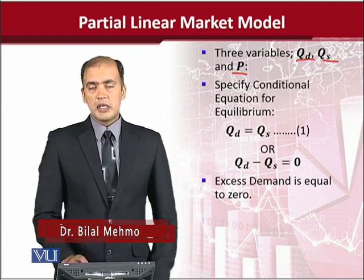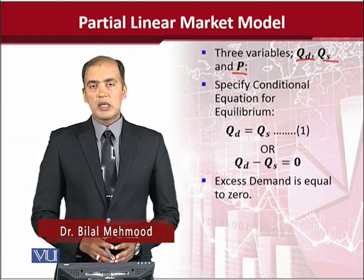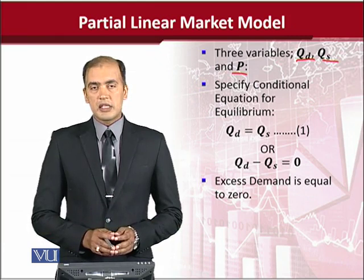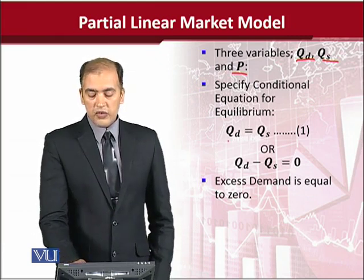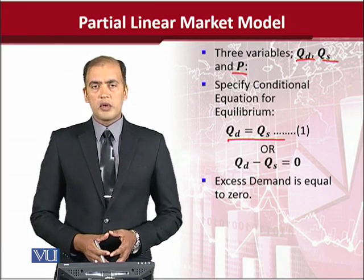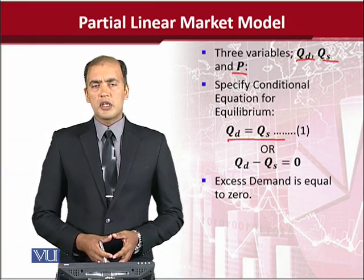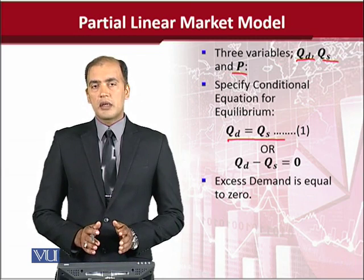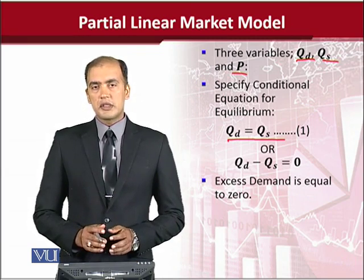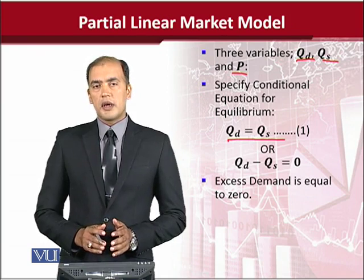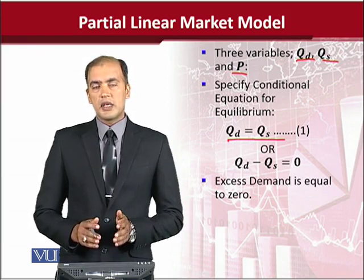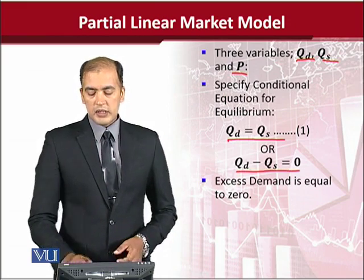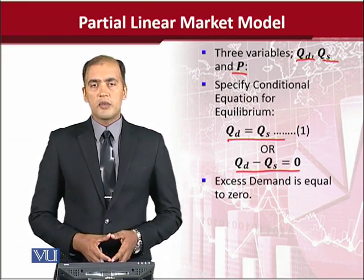Once we have developed the list of variables, we move to the conditions that should be satisfied in this model. This condition is very famous — from microeconomics, we know it as the equilibrium condition of a market: QD is equal to QS. We note this condition and move to the conditional equations. Another way of writing the equilibrium condition is QD minus QS equals zero.